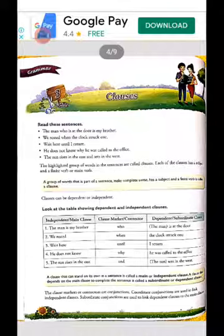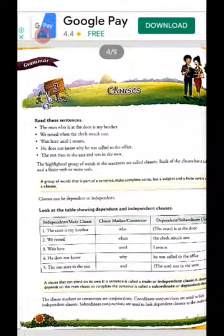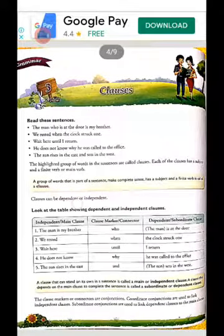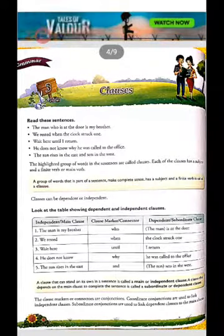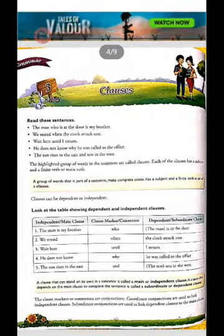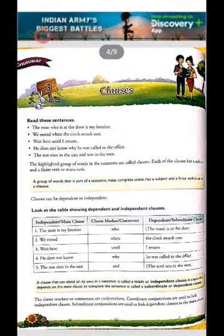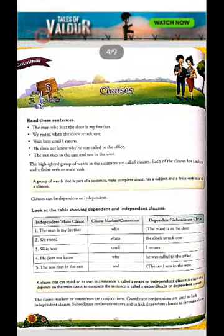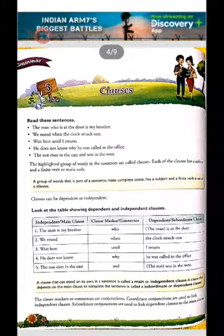The highlighted group of words in the sentences are called clauses. Each of the clauses has a subject and a finite verb, or main verb. A group of words that is a part of a sentence, makes complete sense, and has a subject and finite verb is called a clause.